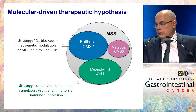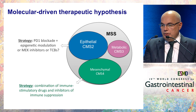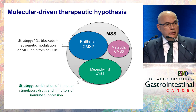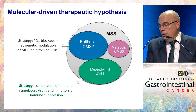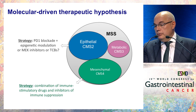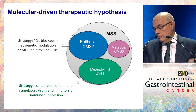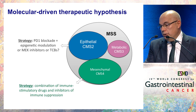For the MSS population — the CMS2 and CMS3 groups — the hypothesis is that strategies such as a PD-L1 inhibitor plus epigenetic modulation, MEK inhibitors as the COTEZO trial is trying to demonstrate, or bispecific antibodies to engage T cells into the tumor, may be effective. For the CMS4 population — a very immune-repressive phenotype — we should test combinations of inhibitors of immune suppression, such as TGF-beta inhibitors, combined with immune-stimulatory drugs enhancing agonistic immune checkpoints to restore immune function.